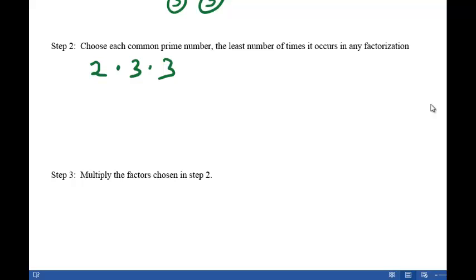Now step 3 says we multiply the factors chosen in step 2. So we multiply 2 times 3, which is 6, and 6 times 3, which is 18.